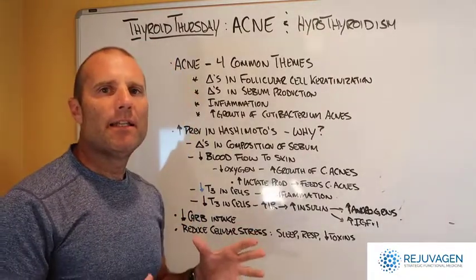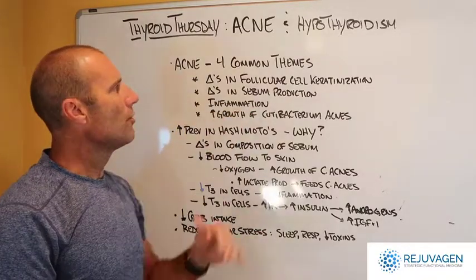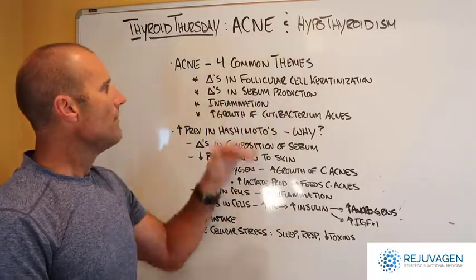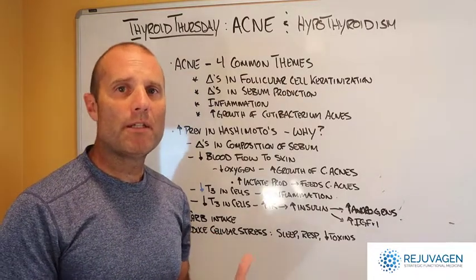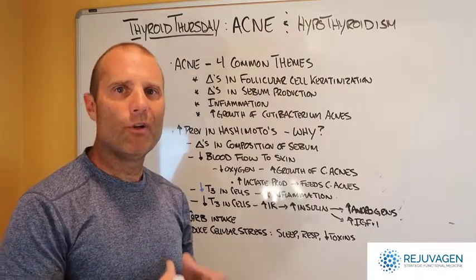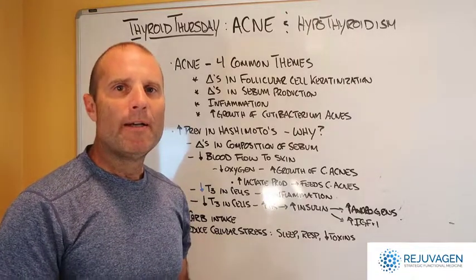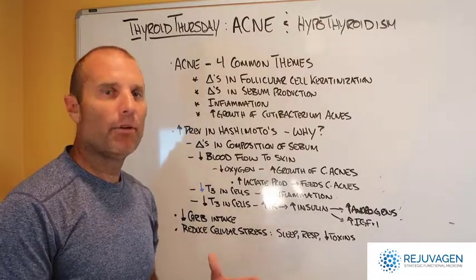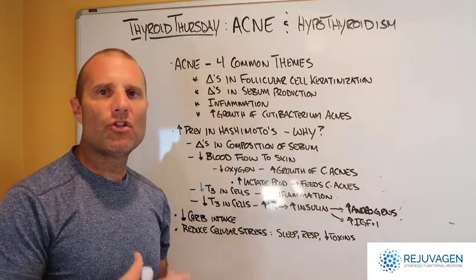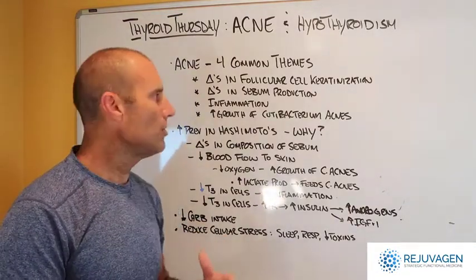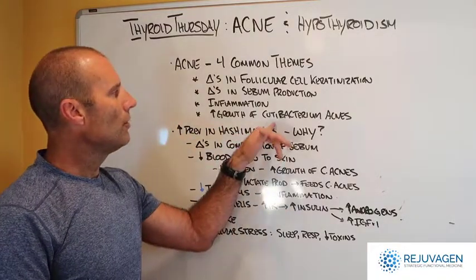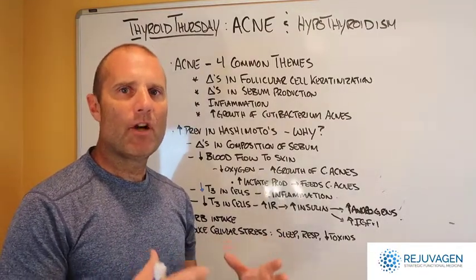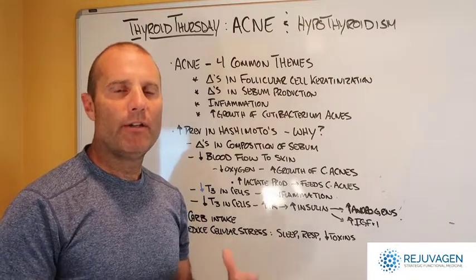The four common themes we see in the literature regarding why acne develops: there's an increased growth or proliferation of the follicular cells and increased keratinization of those cells. There's some type of change in either increased sebum — the oily stuff released from your sebaceous cells — or a change in the composition of that sebum that allows acne to proliferate. We also typically see that acne is associated with some level of inflammation, and there's an increased growth of cutibacterium acnes, or C-acnes, a bacteria often found in and around the acne.